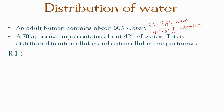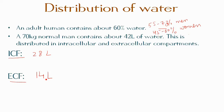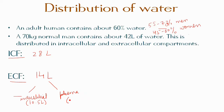The water distributed in the intracellular compartment is known as intracellular fluid (ICF). In a 70 kg normal man, about 28 liters of water is present inside the cell, while about 14 liters is extracellular fluid (ECF). The ECF is further divided into interstitial fluids, which account for about 10.5 liters of water, and plasma, which accounts for 3.5 liters.